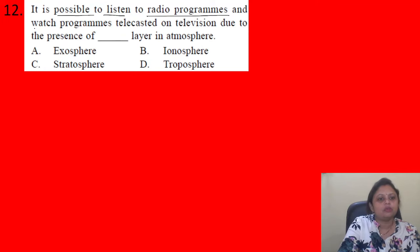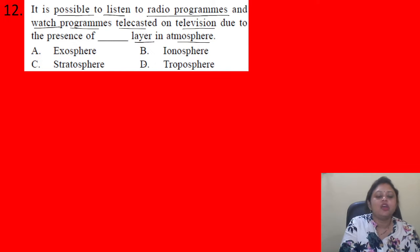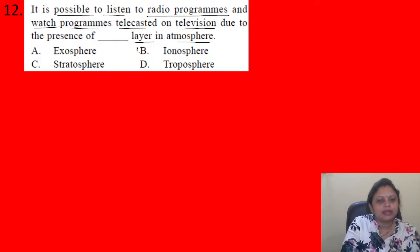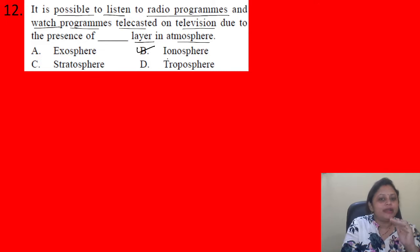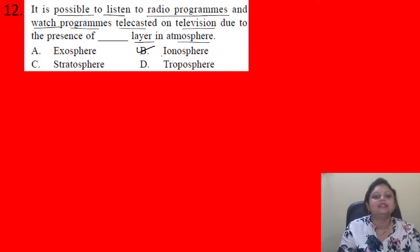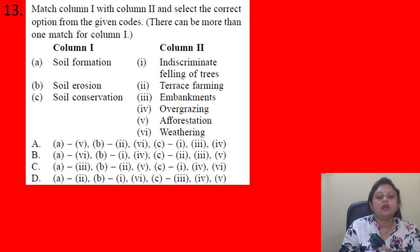Next question: It is possible to listen to radio programs and watch programs daily broadcast on television due to the presence of a dash layer in the atmosphere. Options: A) endosphere, B) ionosphere, C) stratosphere, D) troposphere. The correct answer is option B: ionosphere. Due to the presence of the ionosphere in the atmosphere, it is possible to listen to radio programs and watch programs broadcast on television.